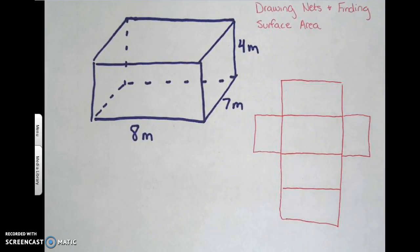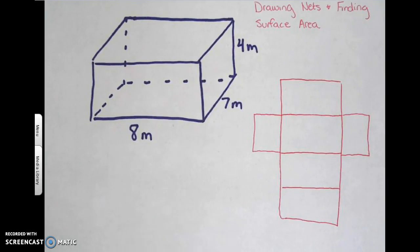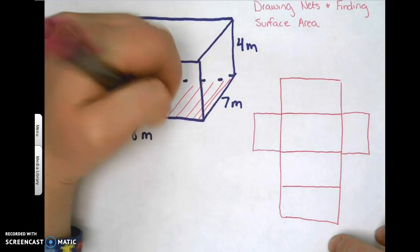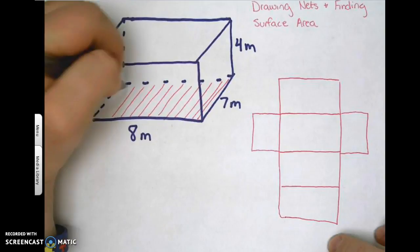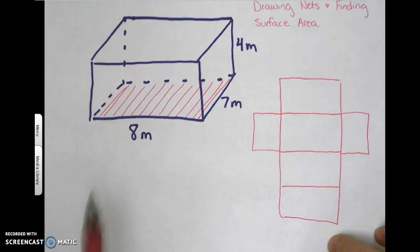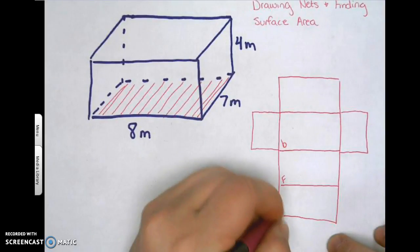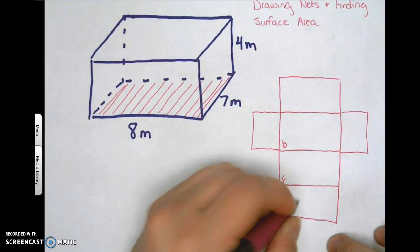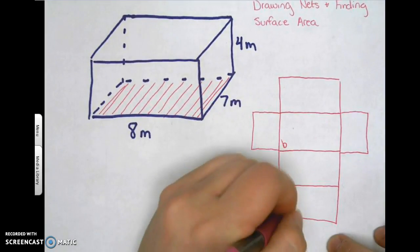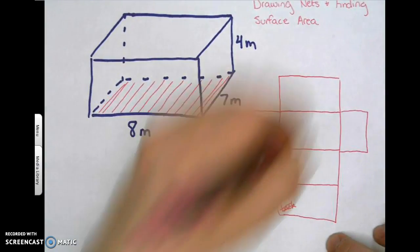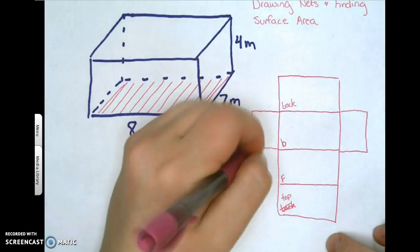The labeling is the trickier part. Focus on one rectangle — the bottom is usually the easiest. Shade in the one you're going to use, then label it as your base. From there, label the front, the back, the top, and then your two sides.